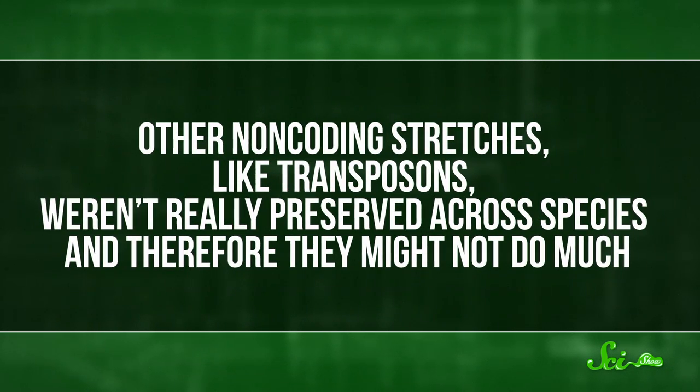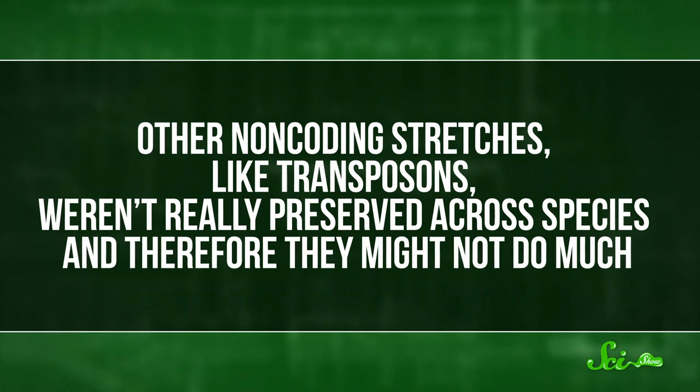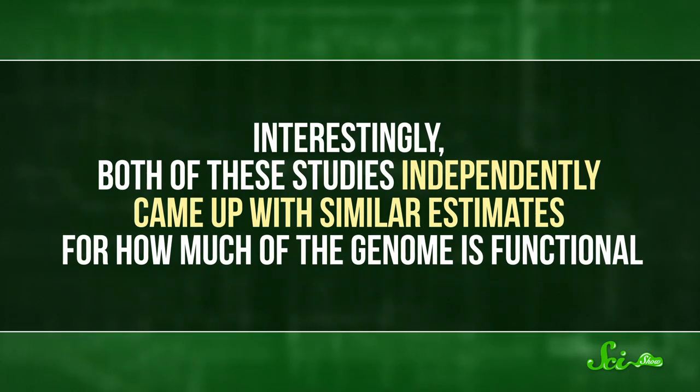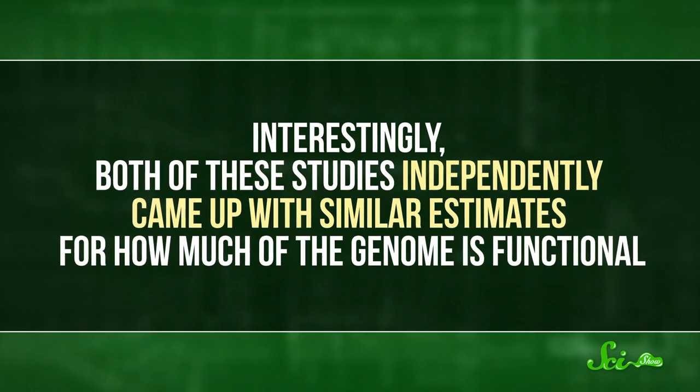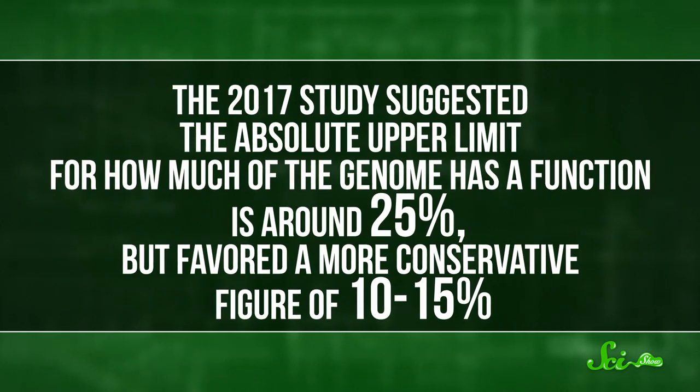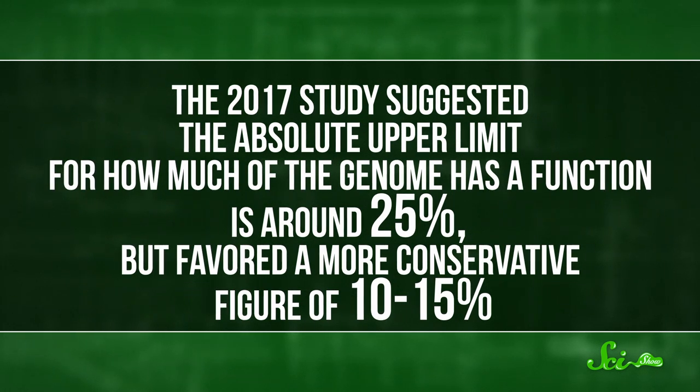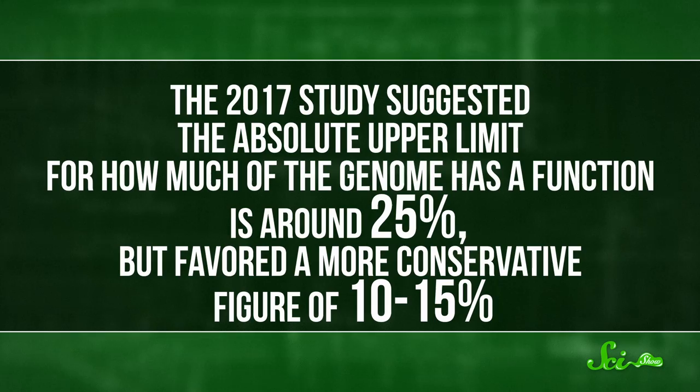And therefore, they might not do much. Interestingly, both of these studies independently came up with similar estimates for how much of the genome is functional. The 2017 study suggested the absolute upper limit for how much of the genome has a function is around 25 percent, but favored a more conservative figure of 10 to 15 percent. And the 2014 study landed at 8.2 percent. That's obviously way less than ENCODE's sweeping 80 percent claim. And those estimates still leave room for functional non-coding elements on top of the coding stuff.